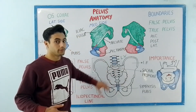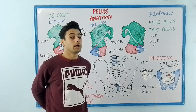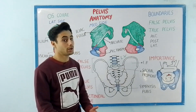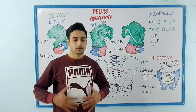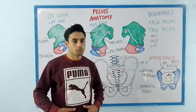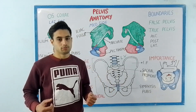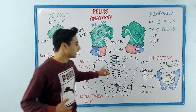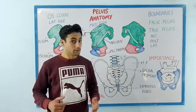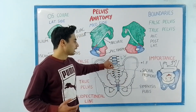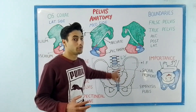Now let's understand the boundaries of the false pelvis and the true pelvis — what is in front, on the lateral side, and behind each. Anteriorly, the false pelvis has the anterior abdominal wall, because the anterior abdominal wall continues down into the false pelvis, and the false pelvis is considered part of the abdomen. On the lateral side we have the iliac fossa, which contains the iliacus muscle. Posteriorly, we have the lumbar vertebrae.